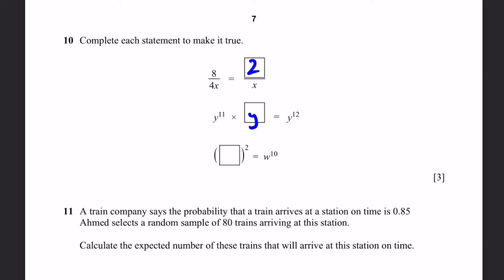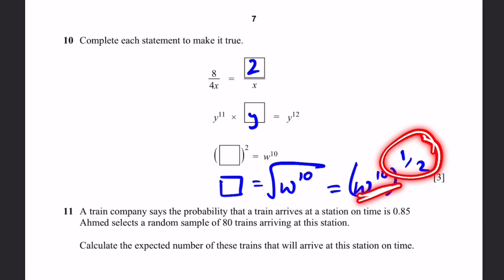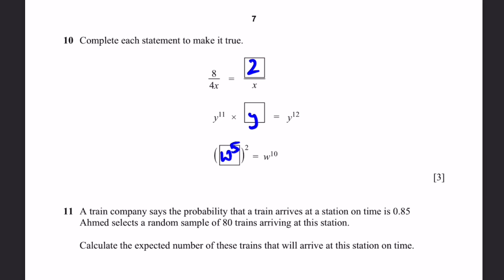For the third one, dash squared equals w to the power of 10. To find what dash is, we have to square root w to the power of 10, because the inverse of a square is square root. This dash equals square root of w to the power of 10, or in other words, w to the power of 10 to the power of half. If we exponent something which has already been exponentiated, we simply multiply the exponents. So 10 times half, that's simply w to the power of 5. If you want to check, w to the power of 5 whole squared is w to the power of 5 times 2, w to the power of 10. That's correct.